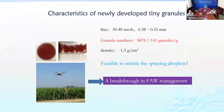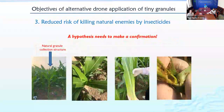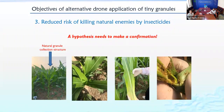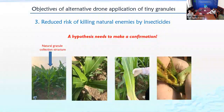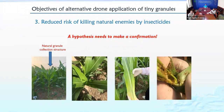Another advantage of tiny granules is the reduced risk to non-target animals, including natural enemies, from insecticide. Because this is a new technology, this is a hypothesis that still needs to be confirmed.